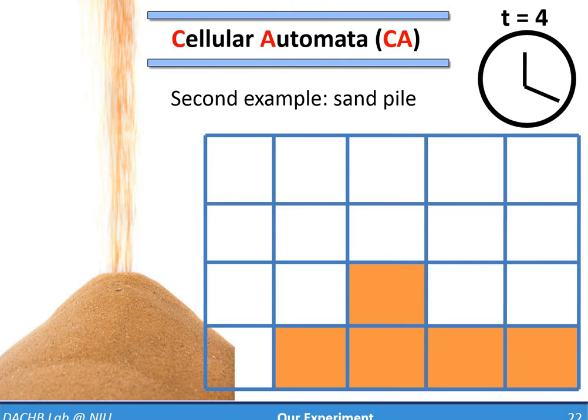These two examples illustrated the main principles of CA. Square grid of cells, color to show the content, and changing over time based on neighbors.